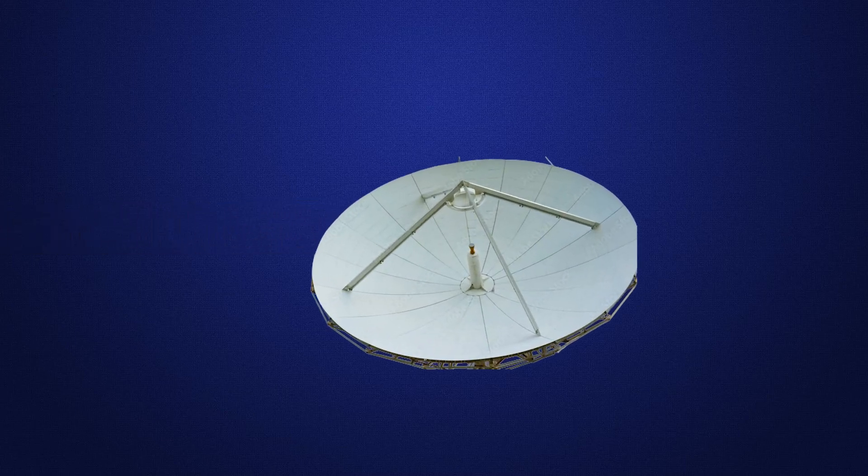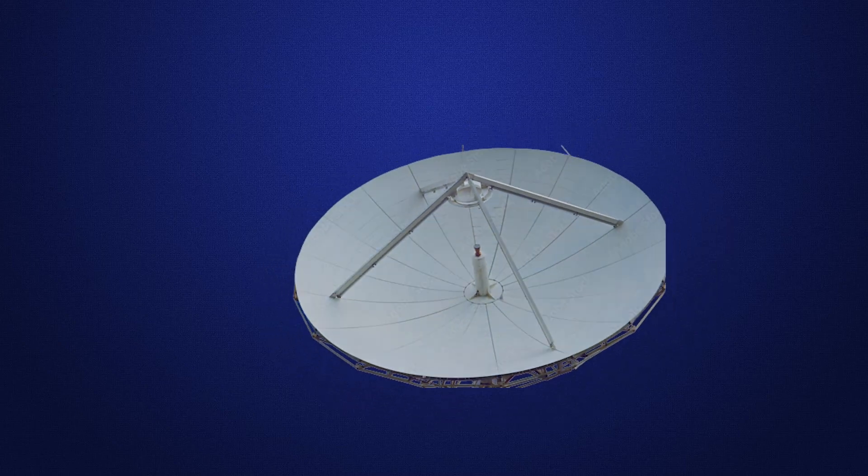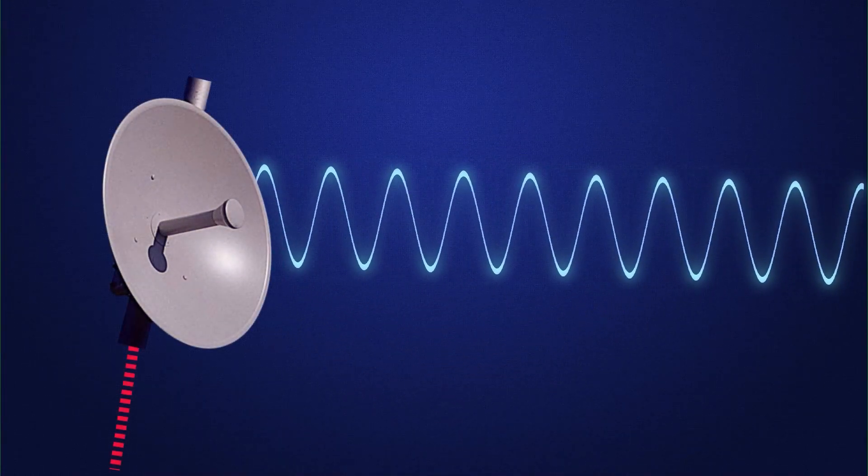There are many different types of microwave antennas, but they can be classified into parabolic antennas. These antennas are the most common type of microwave antenna. They have a parabolic reflector that focuses the radio waves into a beam.